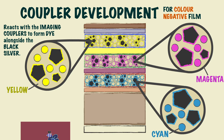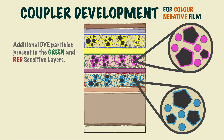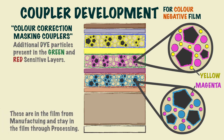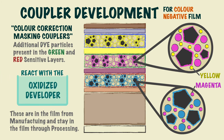Also for negative emulsion, there are additional dye particles present in the green and red sensitive layers, known as colour correction masking couplers. The green sensitive layer has yellow masking couplers and the red sensitive layer has magenta masking couplers. These are in the film from manufacturing and stay in the film through processing, unless they are near the exposed silver halide, in which case, similarly to the imaging couplers, they react with the oxidised developer and change colour.